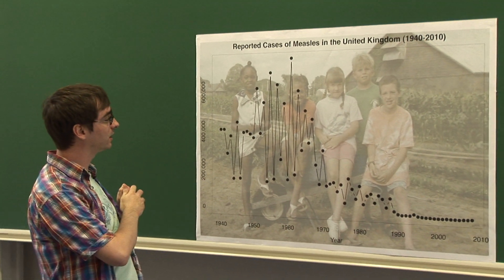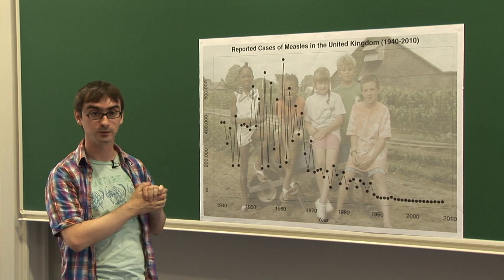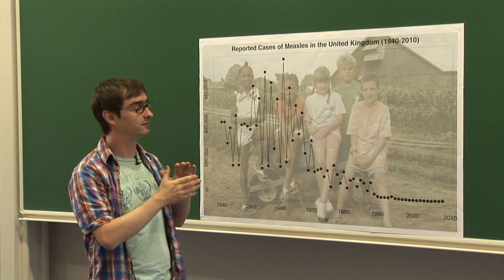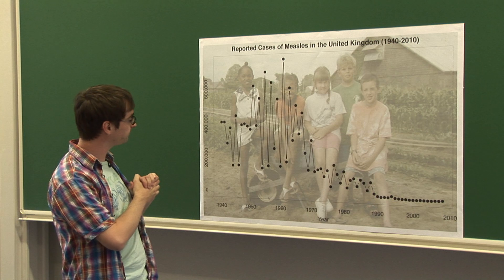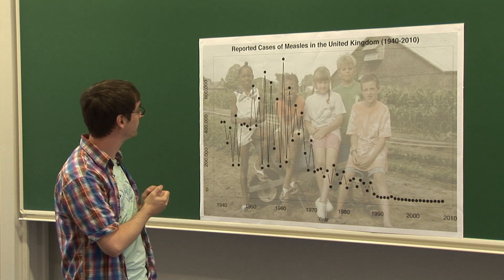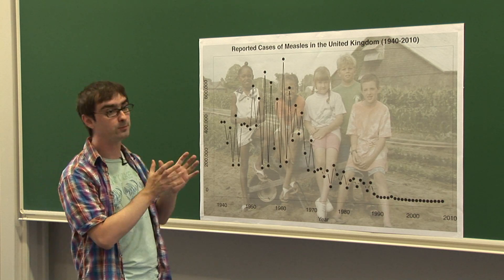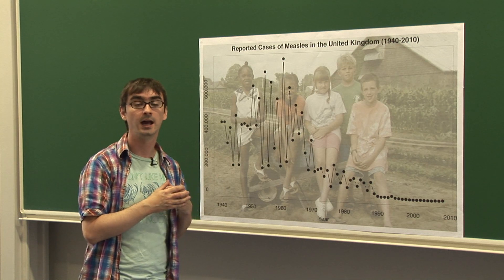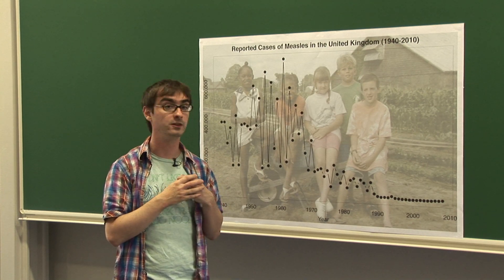This is a graph of the reported cases of measles, which was an infectious disease — and still is an infectious disease — spread by a virus, from 1940 up to 2010. Measles in the early part of the last century would have been a very common experience, particularly for primary school children in the UK.